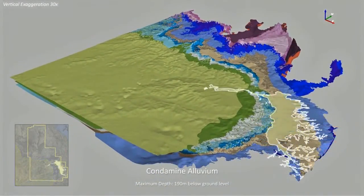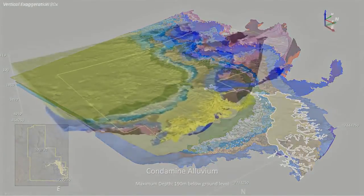The Condamine Alluvium has been deposited by the Condamine River and its tributaries. Many irrigators draw water from this alluvial system.